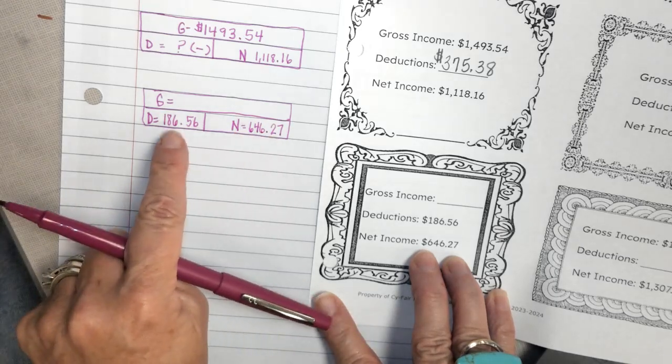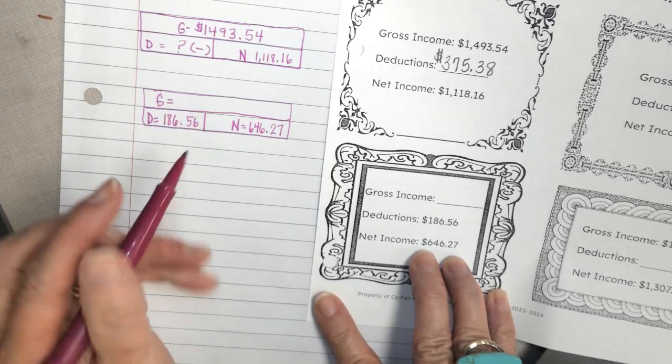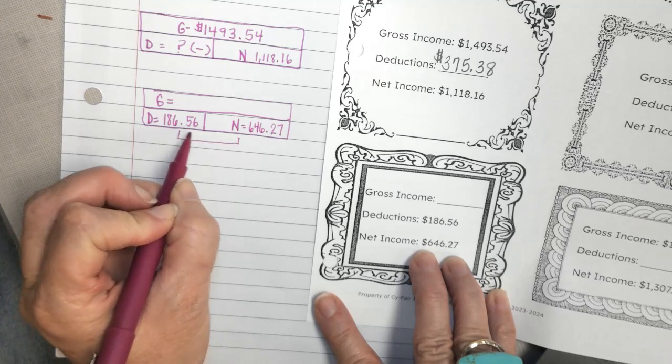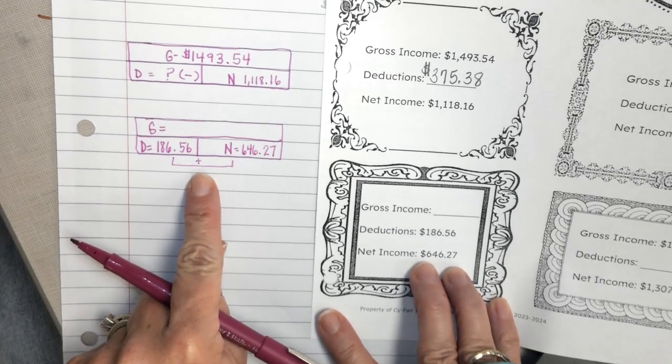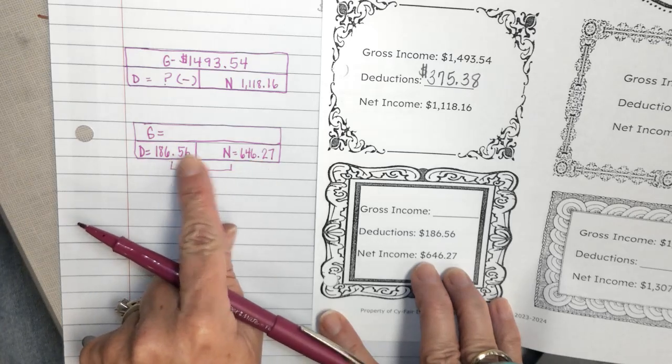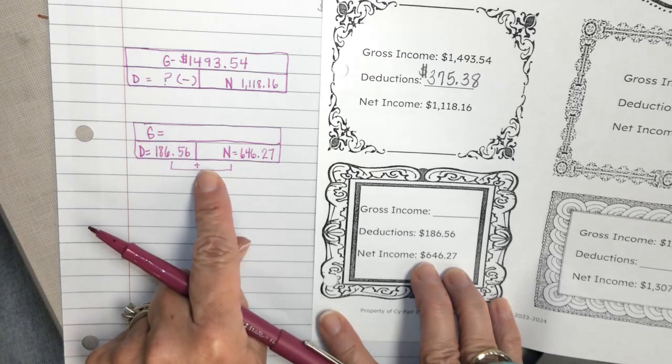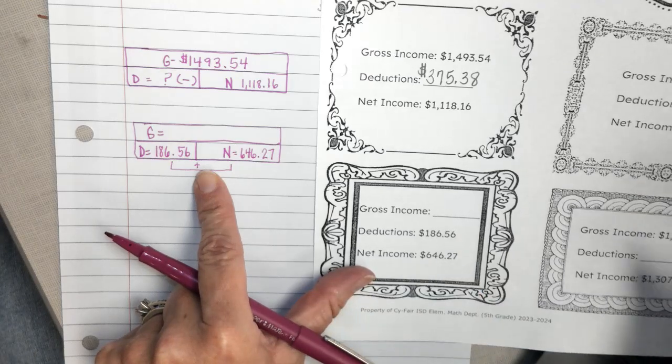So to figure out our gross income, to figure out our total amount, we're going to put those two together. Remember, these are unequal amounts, so our only choices are add or subtract. And in this case, we're going to put them together to find the gross.